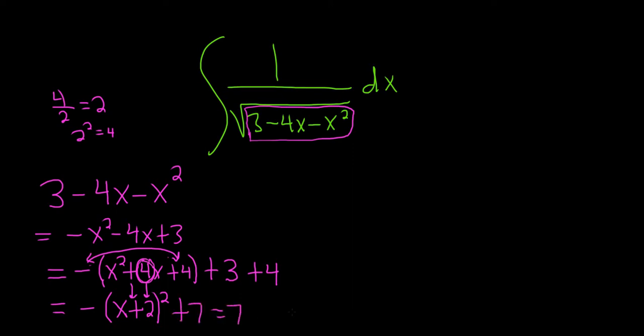So this is 7 minus (x plus 2) squared. So a little bit of work there. Let's rewrite this. This is the integral of 1 over the square root of 7 minus (x plus 2) squared dx. I was going to skip a step but decided not to.